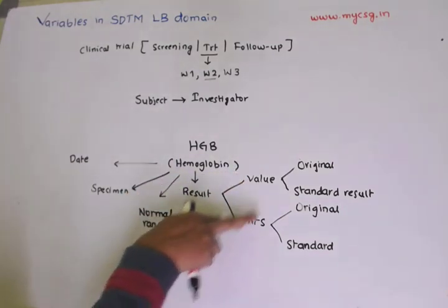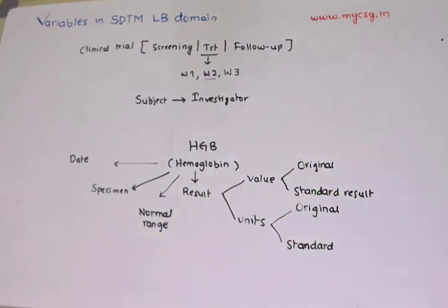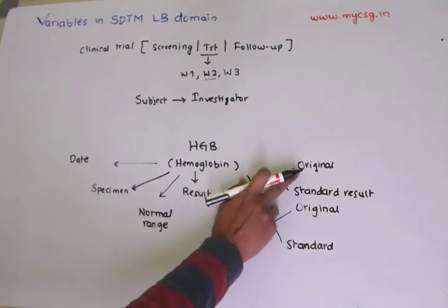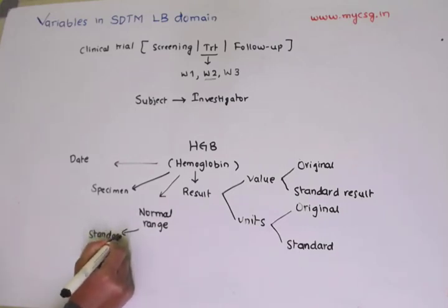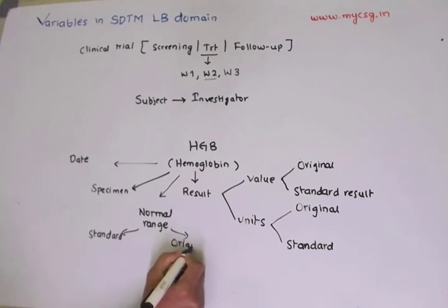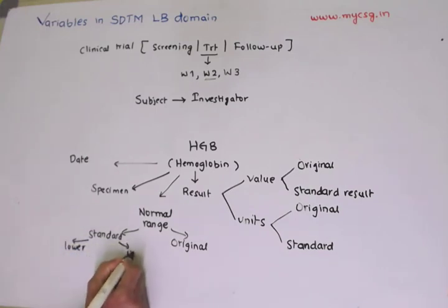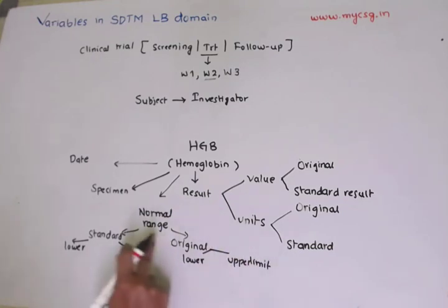So we have value and units — original result value and standard result value, original result unit and standard result units. For each lab test result, there will also be a normal range, again in terms of original result units and standard result units. For each normal range, there will be a lower bound or lower limit and an upper limit.